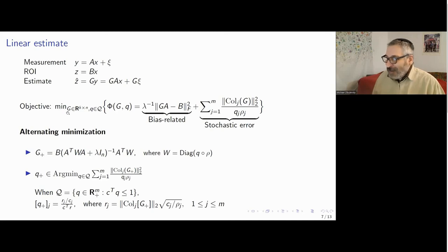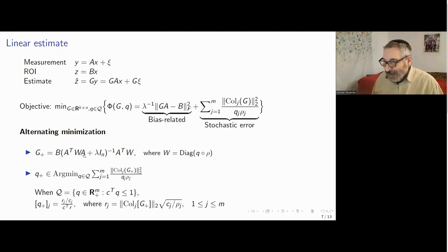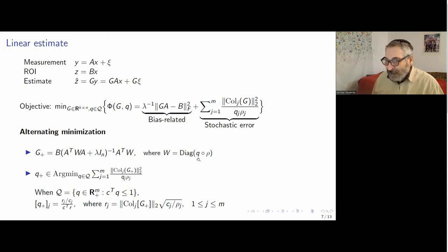This is a convex optimization problem in Q and G, solvable by general convex optimization methods. We also introduced a special method called Alternating Minimization — alternately minimizing in G and Q over many iterations — which in practice is much more efficient and reaches very good accuracy in a small number of iterations, like six or seven. If Q is fixed, the problem for G is a standard optimal linear estimator: without the bias term it is a weighted least squares problem, and with the bias term it becomes regularized weighted least squares.